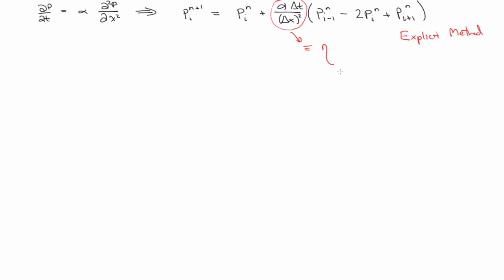So remember, I said we call it explicit because we're writing down the new pressure plainly, in terms of all the old pressures. So just to be explicit about the explicit method. Let's write out a couple of time steps to just get a feel for how it flows, right?